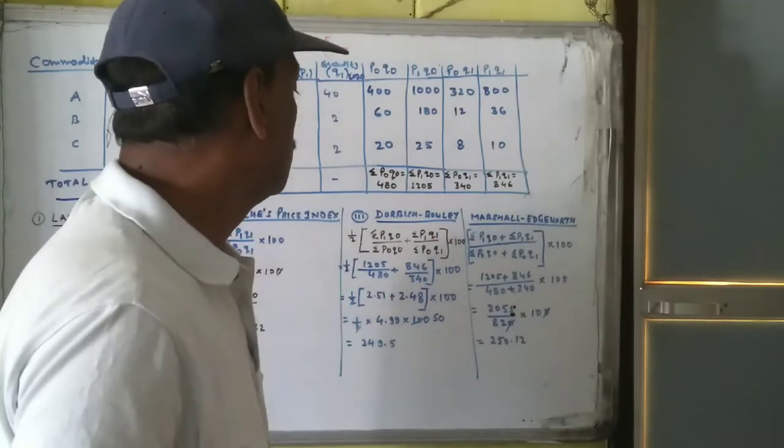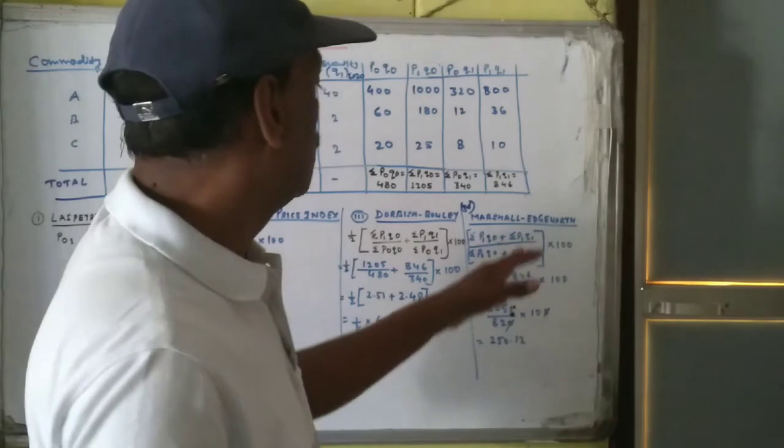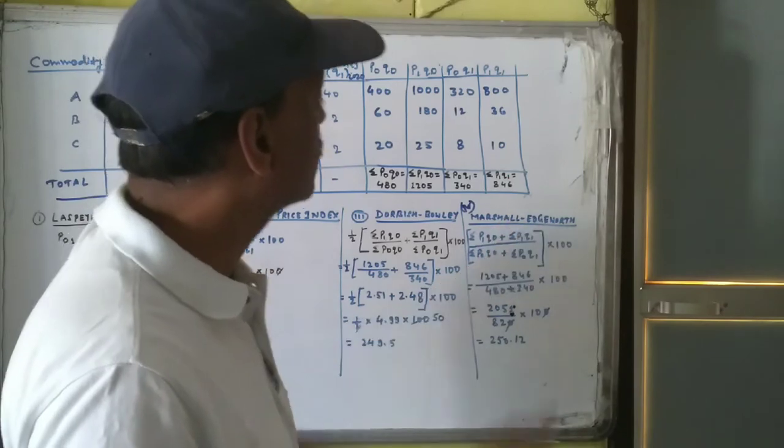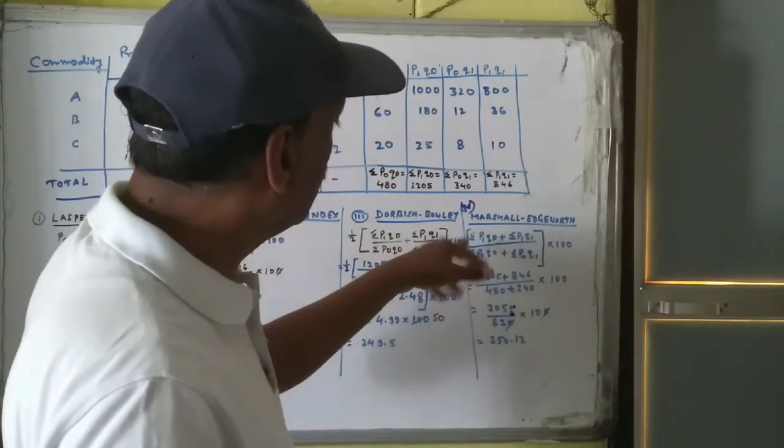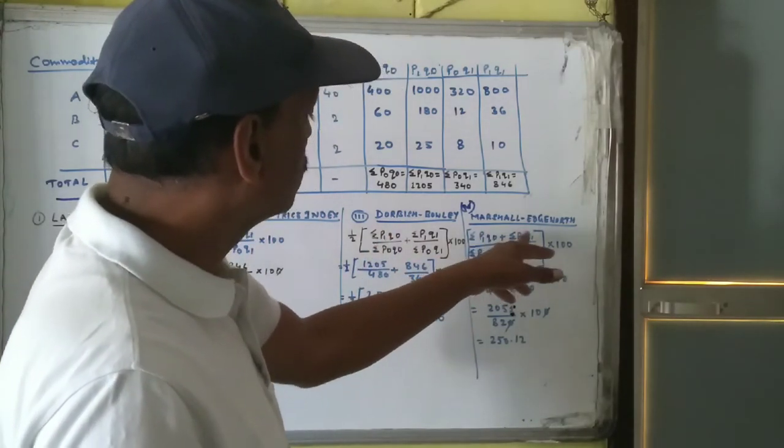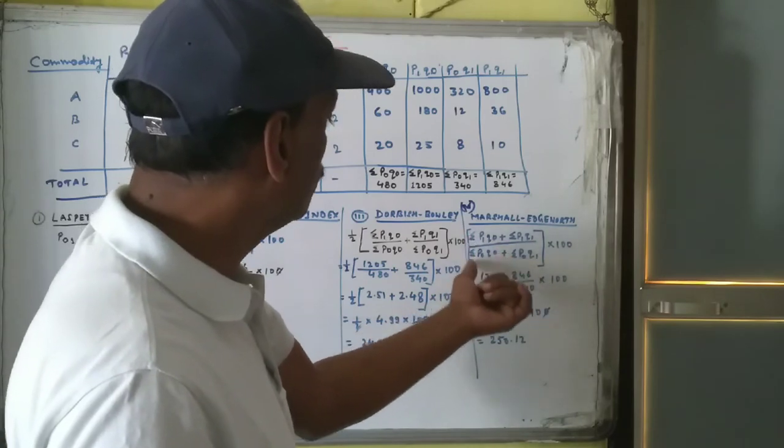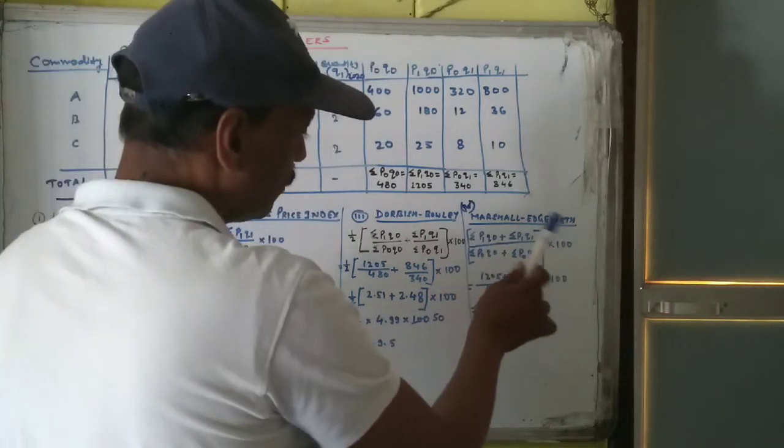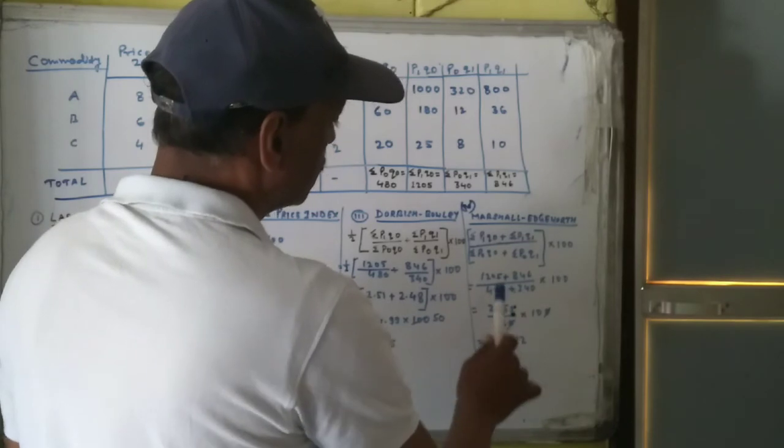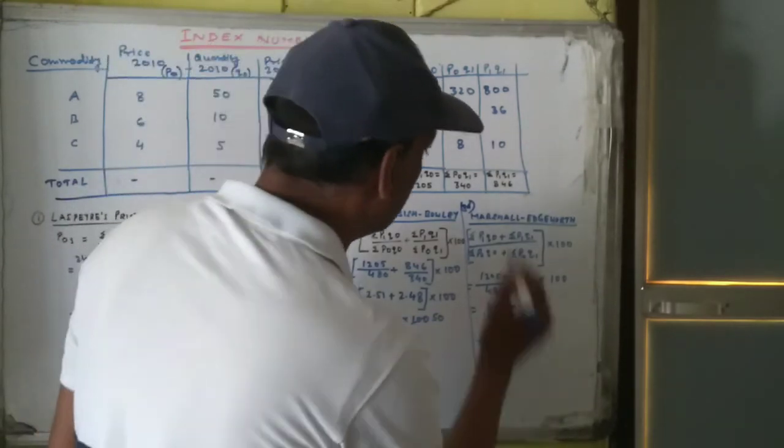Fourth formula method is called Marshall-Edgeworth method. In Marshall-Edgeworth method, only difference is there. Just see the difference between Dorbish-Bowley and Marshall-Edgeworth. Here in this formula, 1 by 2 is multiplied and 100 is multiplied, and these are separate. But here in this formula, formula is the same but here is the summation sign. 1 by 2 is not here, but 100 is here. So in this question, we will add first. Add these two numbers, getting the sum. And we have to add this also. After getting the calculation, we will get this.